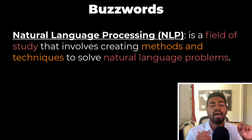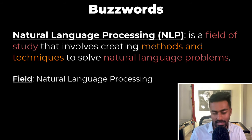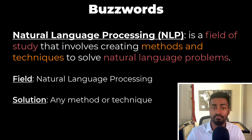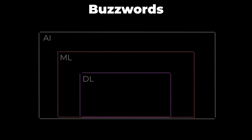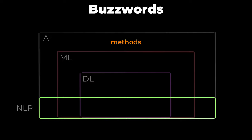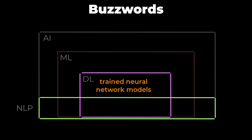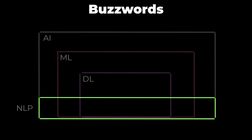Now let's talk about natural language processing or NLP. NLP is a field that involves using methods and techniques to solve natural language problems. The field is natural language processing and the solution can be any method or technique. By this definition, NLP solutions are a subset of just AI solutions — but that's where the comparison stops, because NLP solutions may or may not be trained models. Hence the rectangle for NLP could intersect with ML. NLP solutions may or may not be trained neural network models, and hence the NLP rectangle can intersect with the deep learning rectangle too. Because NLP is a field of study, we can draw the rectangle accordingly.